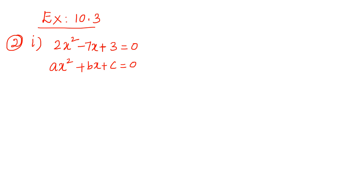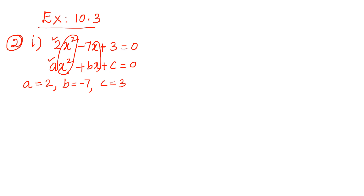Now compare the given quadratic equation with the standard form and note down the values of a, b, and c. The value of a is 2, the value of b is minus 7, and the value of c is 3. By comparing the coefficients of x², we got a = 2; by comparing the coefficients of x, we got b = -7; and comparing the constants, we got c = 3.